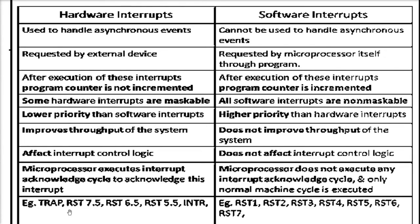Examples of hardware interrupts: TRAP, RST7.5, RST6.5, RST5.5, and INTR — these are all hardware interrupts. And RST1 through RST7 — that is RST1, RST2, RST3, RST4, RST5, RST6, RST7 — these are all software interrupts.